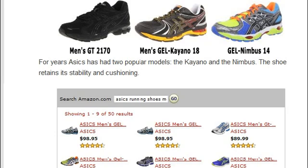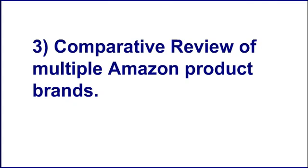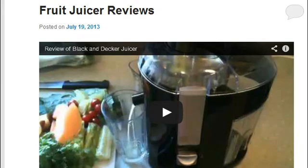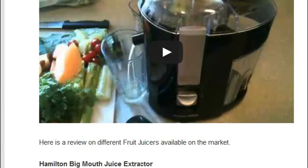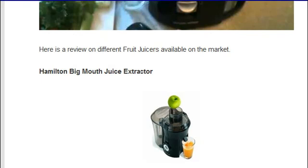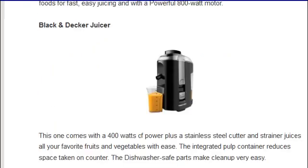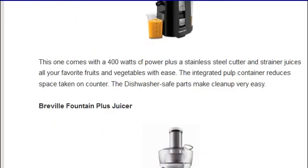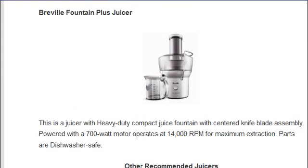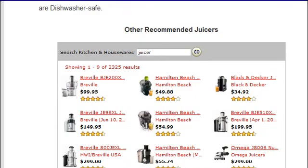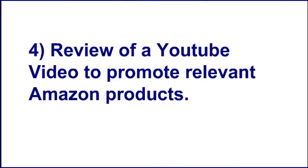You can compare those items and promote them using your Amazon affiliate links. Type three: a comparative review of multiple Amazon product brands. For example, you can review different juicer brands like the Hamilton Beach Big Mouth juice extractor and the Breville Fountain Plus juicer, give a short comparison on those brands, and promote them with your Amazon affiliate links.